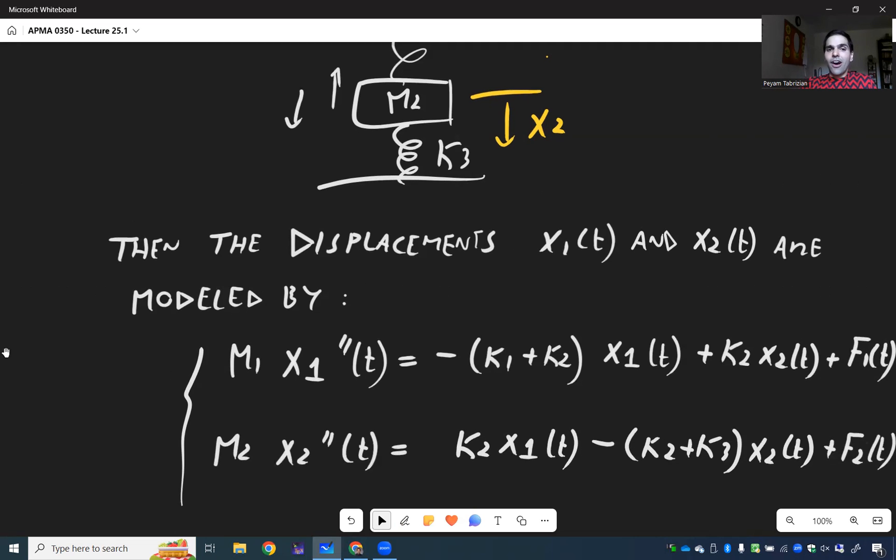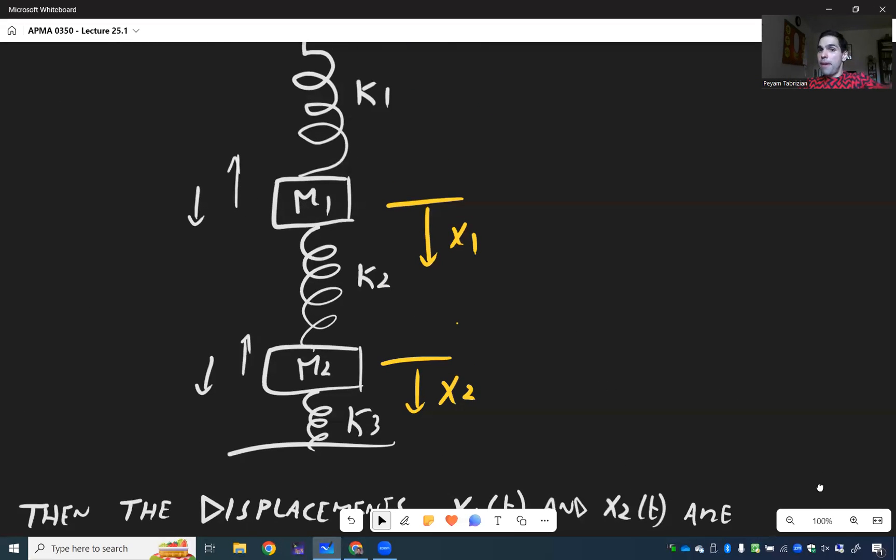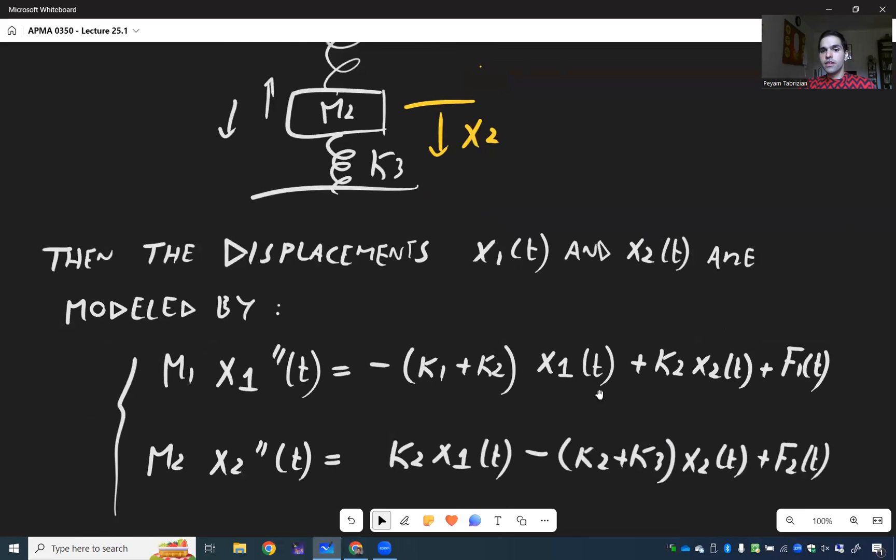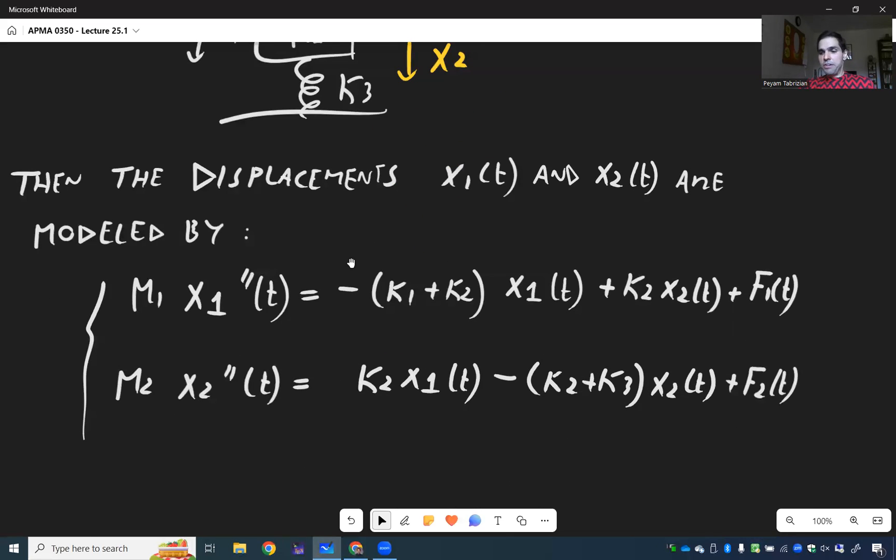And I know this looks extremely complicated but I really want you to compare it with the previous equation we had where it was mass times X double prime equals to something depending on X and the force. And by the way what's cool about this is M1 depends on the neighbors K1 and K2 which you see here and the second mass depends on the neighbors K2 and K3 which you can see here. I want to show you a little demo now but I do want to mention just one little thing: because of those forces F1 and F2 this becomes an example of an inhomogeneous system.